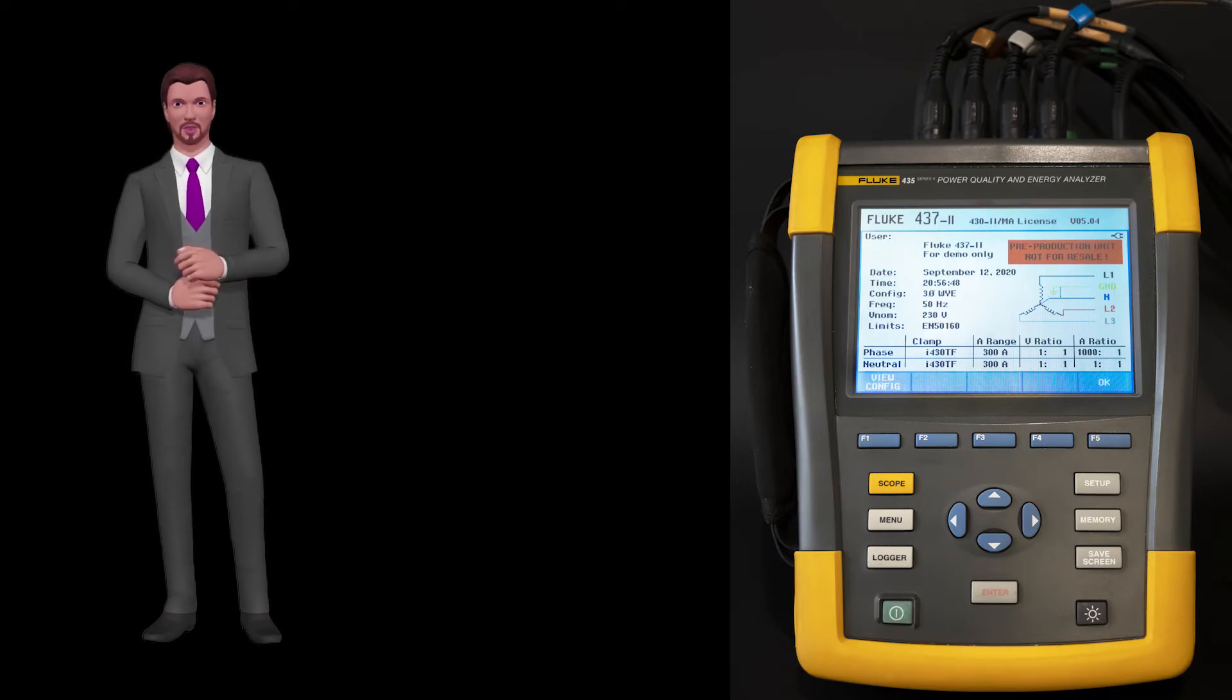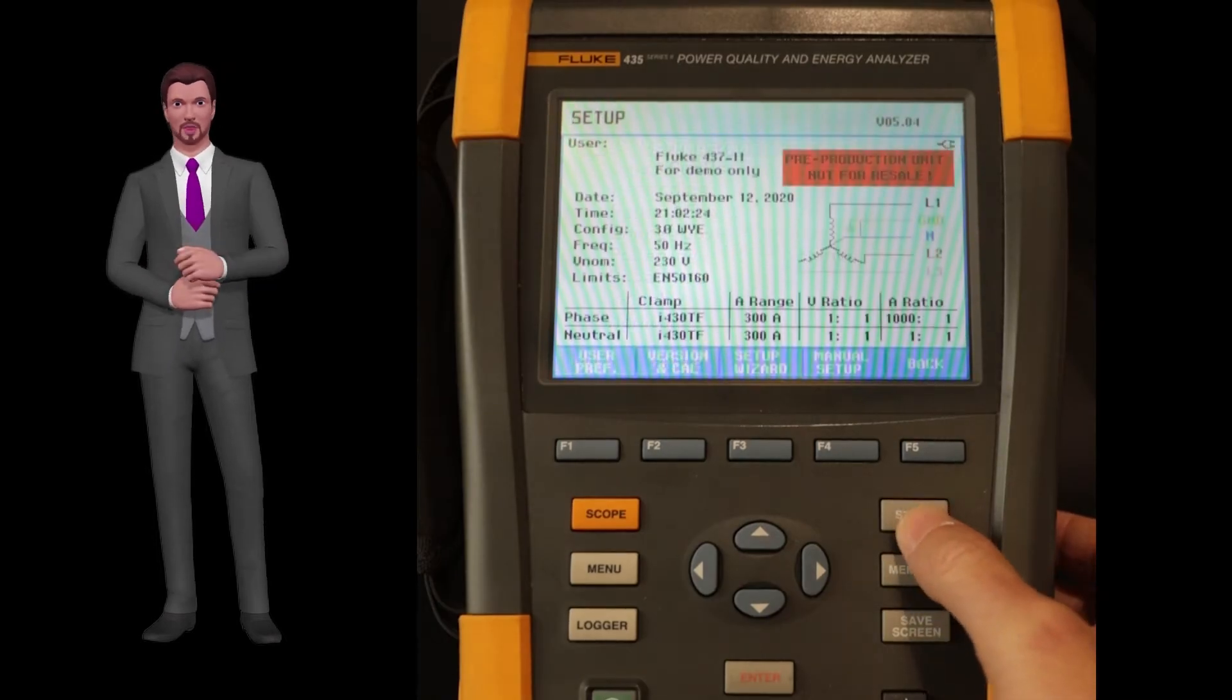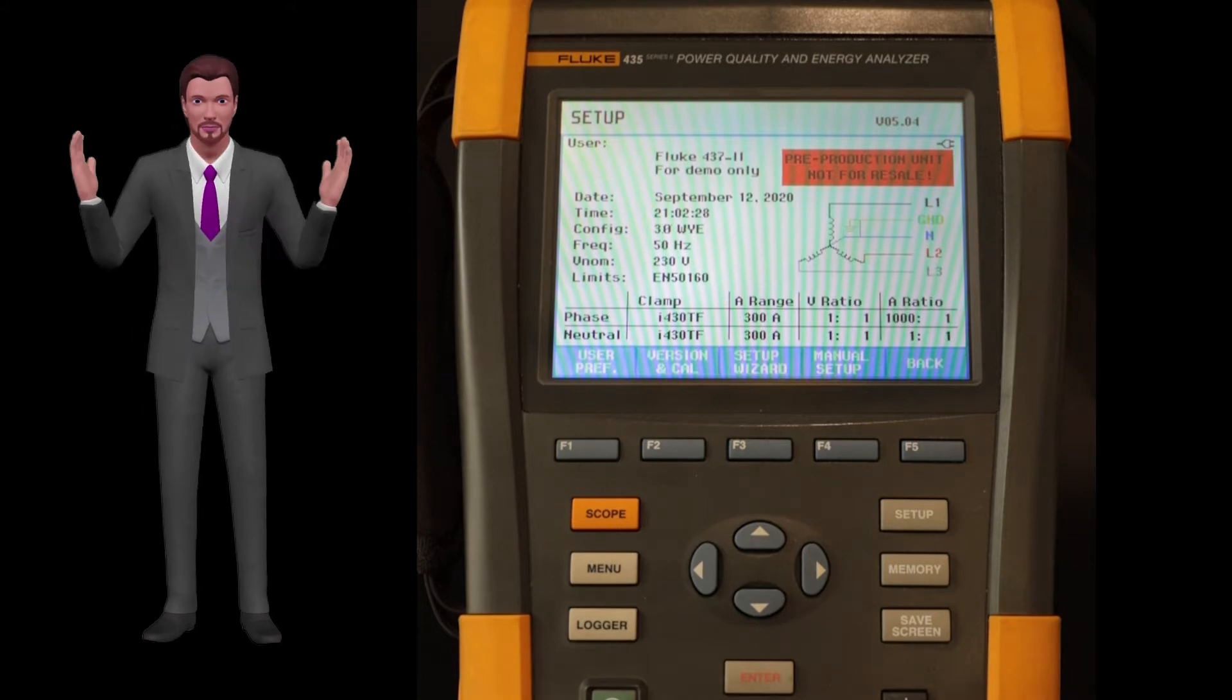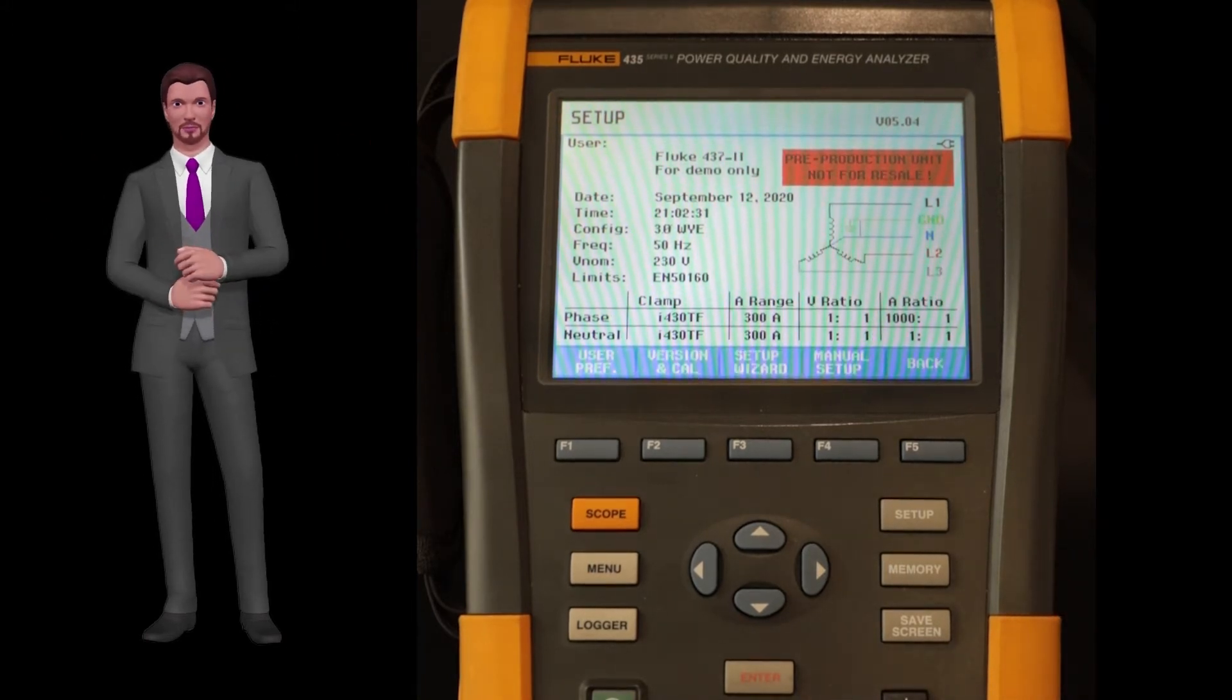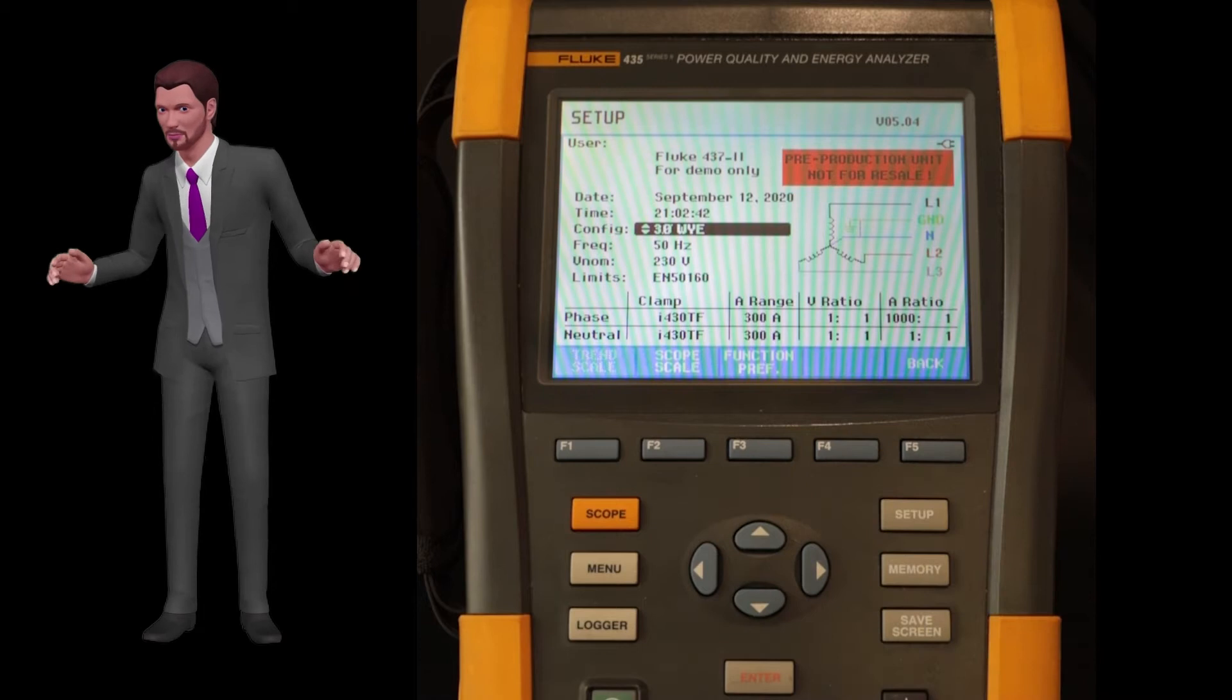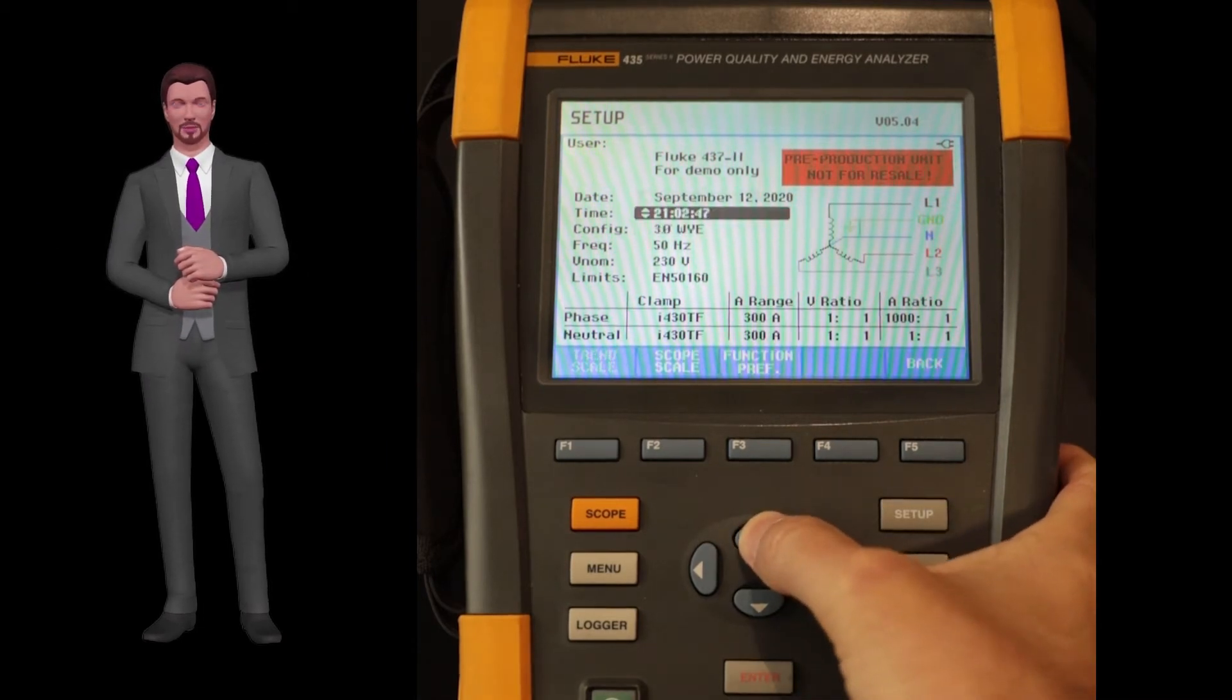It is time to see the setup key that you can find on the right side of the instrument. If you press this key, the summary screen of the instrument configuration will appear. In the blue options bar, on F4, there is the manual setup option, which will allow us to change and configure the parameters to make a correct registration. Once pressed, the currently selected power grid topology will be highlighted.